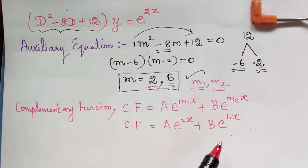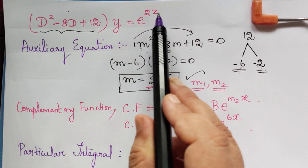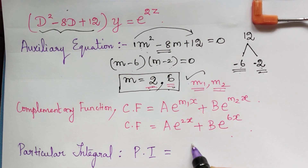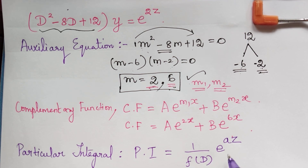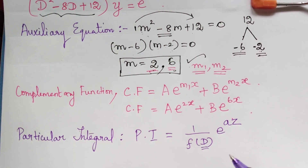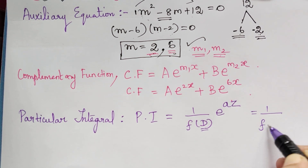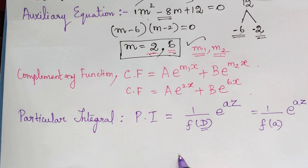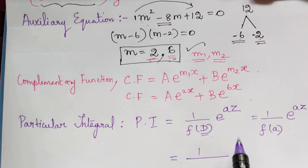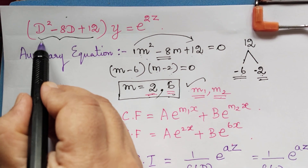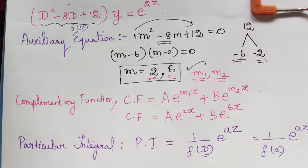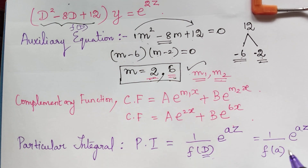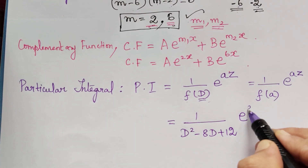Next we find the particular integral. The right-hand side is an exponential function, so the particular integral is given by (1/f(D))·e^(az). We have f(D) = D² − 8D + 12 and a = 2 (since the exponent is e^(2z)). Substituting D = 2: we get 1/(2² − 8×2 + 12)·e^(2z) = 1/(4 − 16 + 12)·e^(2z).